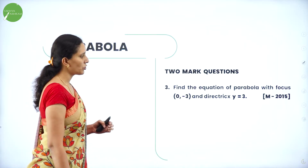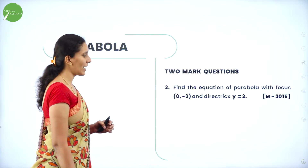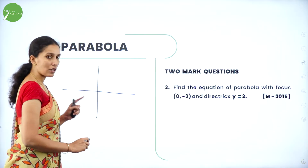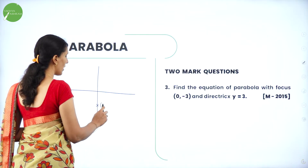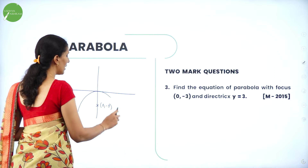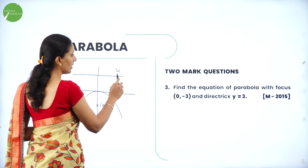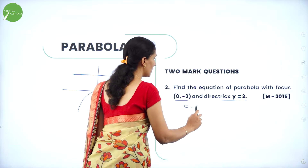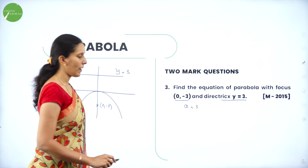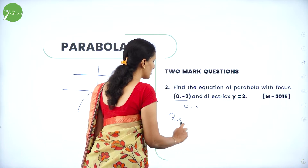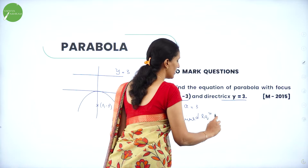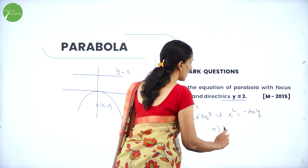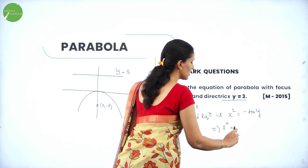Two-mark question: Find the equation of the parabola with focus (0, −3) and directrix y = 3. The focus is at (0, −3), so it is clearly a downward parabola and the directrix is y = 3. Hence A = 3. Since it's a downward parabola, the required equation is x² = −4Ay, which gives x² = −4 × 3 × y, that is x² = −12y.